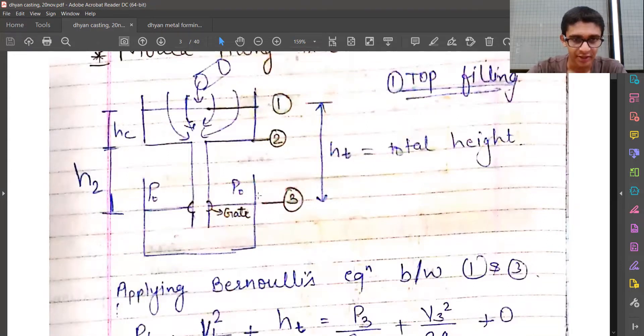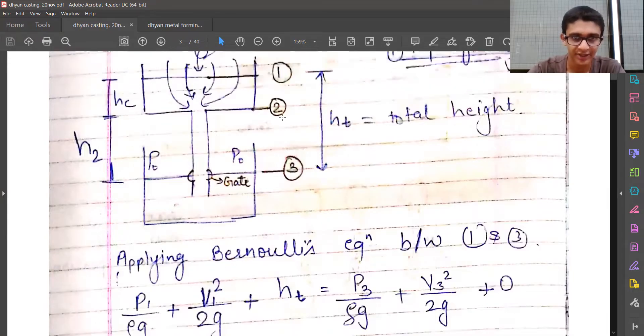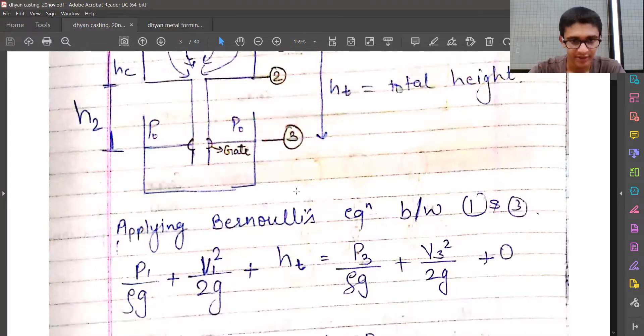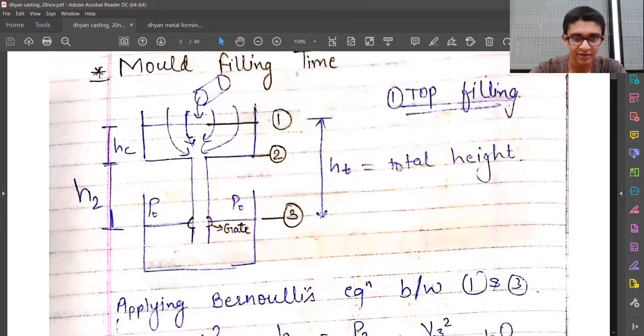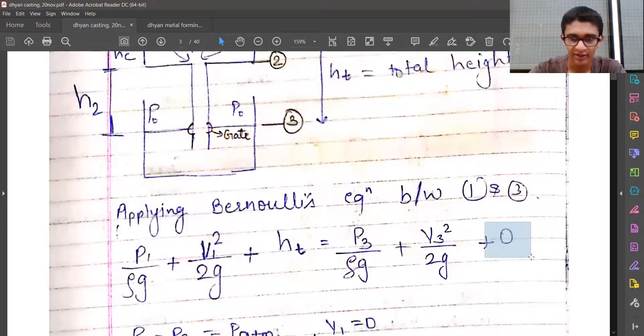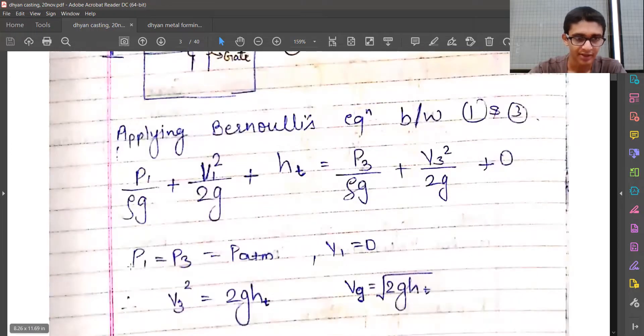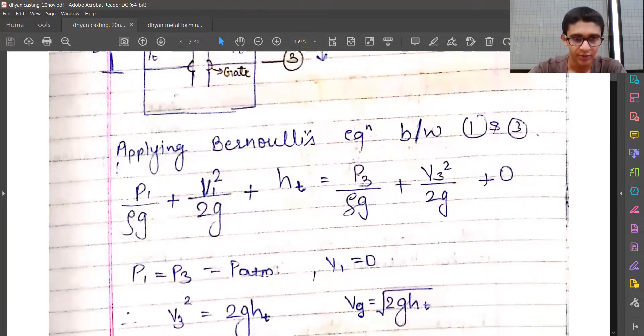p0 is the external pressure or atmospheric pressure. Point 3 is where the gate enters, or from where the casting actually starts. There are three locations, and we are going to apply Bernoulli's equation between points 1 and 3. I have written p1, v1 terms, and ht term. At location 3, the height is zero - that's my reference. All heights are with respect to point 3. p1 and p3 are both atmospheric pressure because both are open to atmosphere.